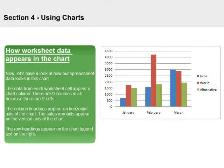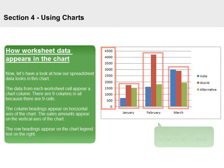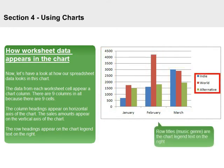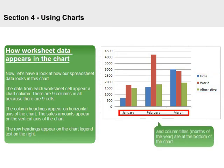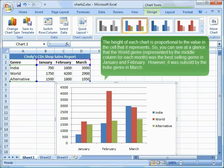How worksheet data appears in the chart: let us have a look at how our spreadsheet data looks in this chart. The data from each worksheet cell appears as a chart column. There are 9 columns in all because there are 9 cells. The column headings appear on the horizontal axis of the chart. The sales amounts appear on the vertical axis. The row headings appear on the chart legend text on the right.